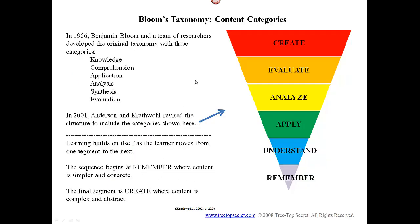Bloom's Taxonomy Content Categories. Here's an outline of the categories. In 1956, Benjamin Bloom and a team of researchers developed the original taxonomy with these categories: knowledge, comprehension, application, analysis, synthesis, and evaluation. However, Bloom's was revised in 2001, and so now we work with the categories of create, evaluate, analyze, apply, understand, and remember.